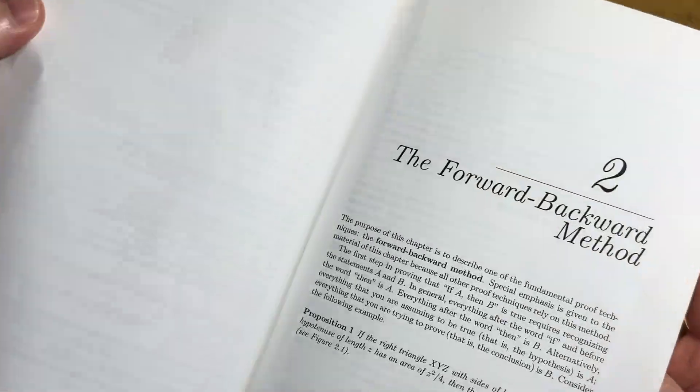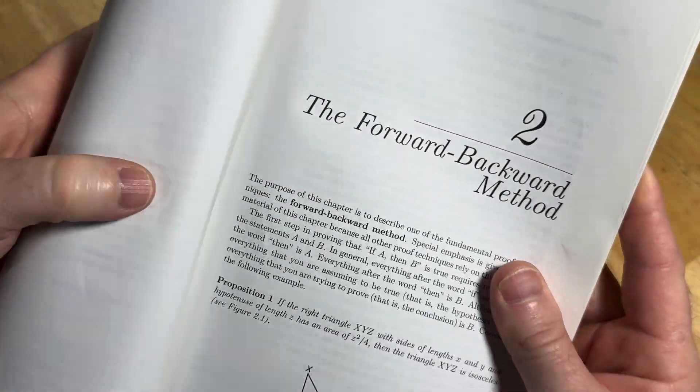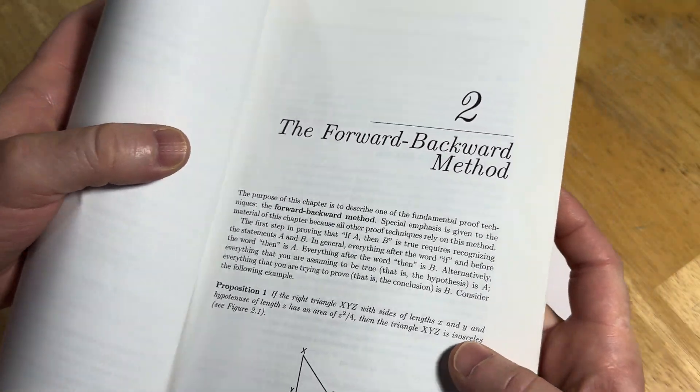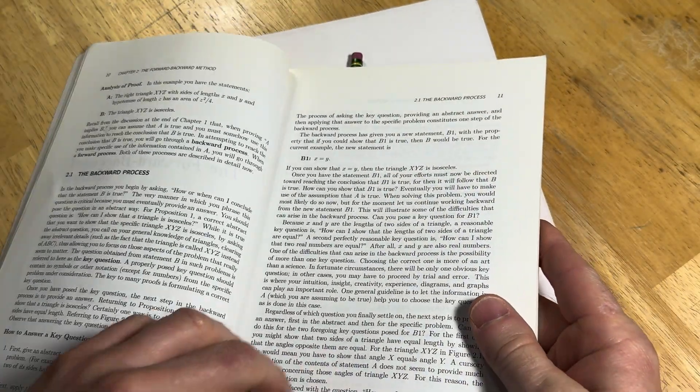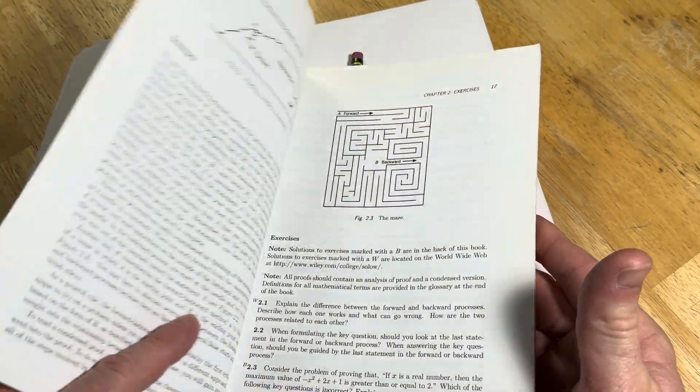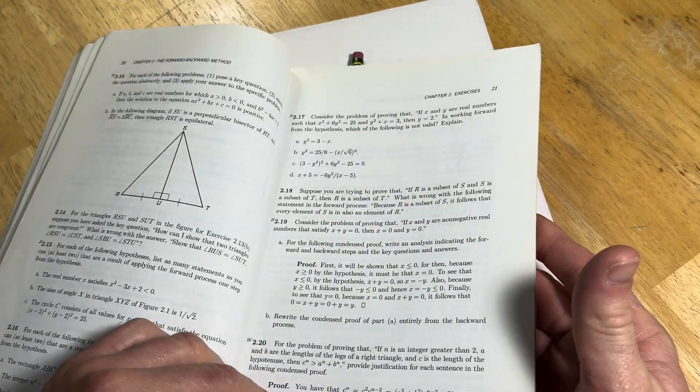And then here he talks about the forward backward method. This is chapter two. And gives you a method there that you can look through. Then you have some exercises.